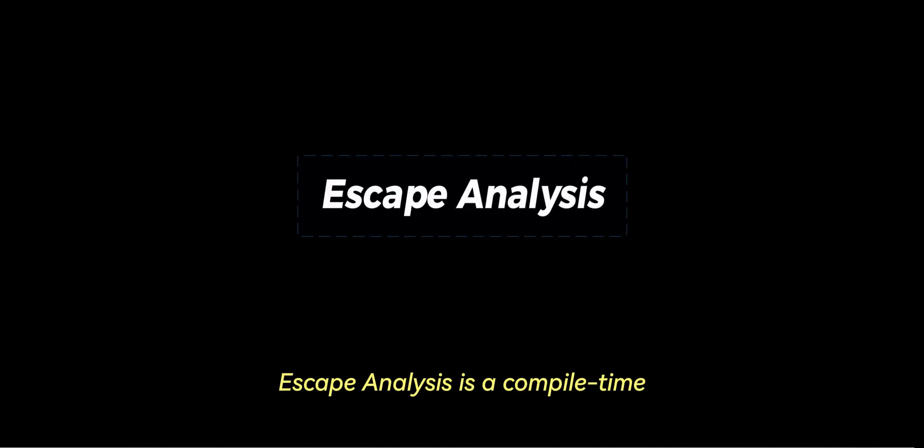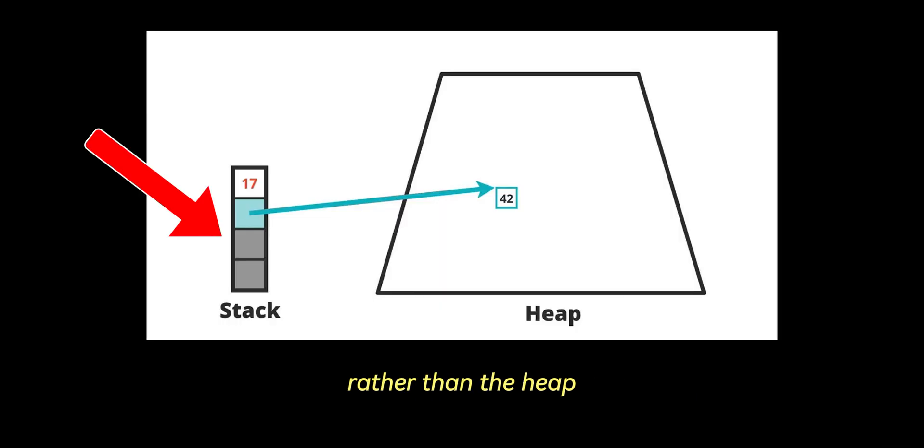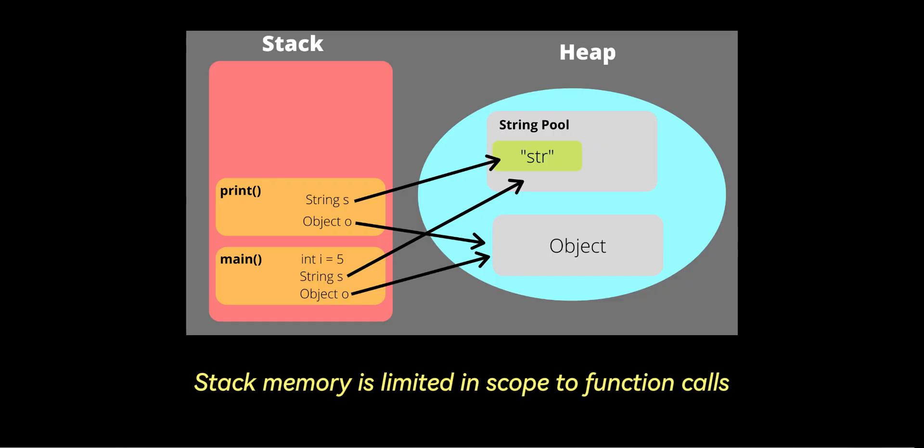Escape analysis is a compile-time process that determines whether a variable can be allocated on the stack rather than the heap. Here's why this matters. Stack memory is limited in scope to function calls, and memory is automatically freed once the function exits.